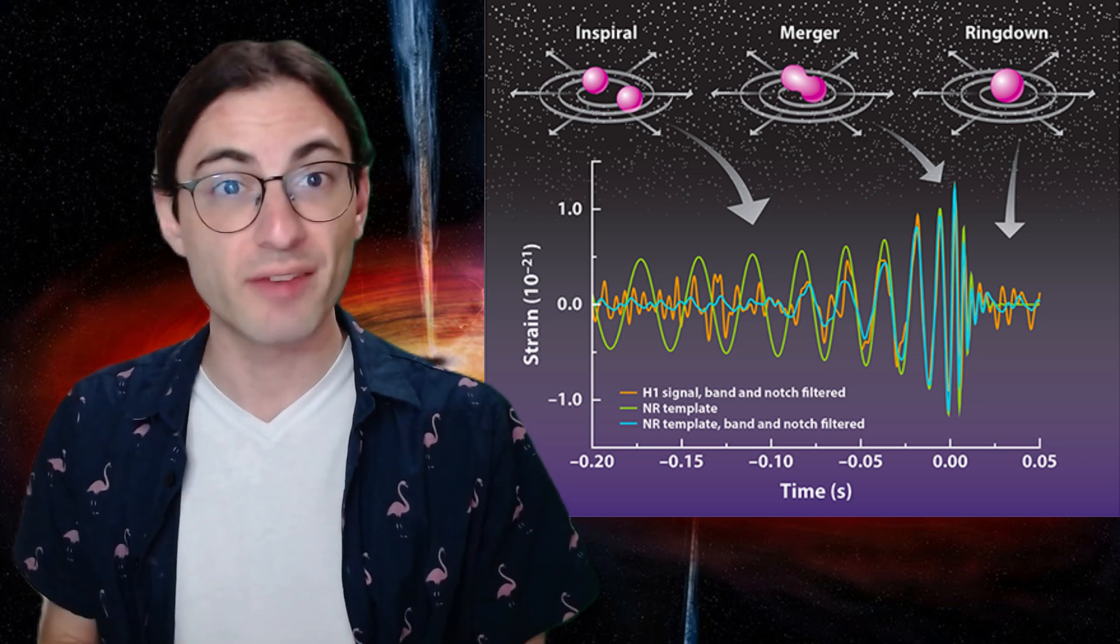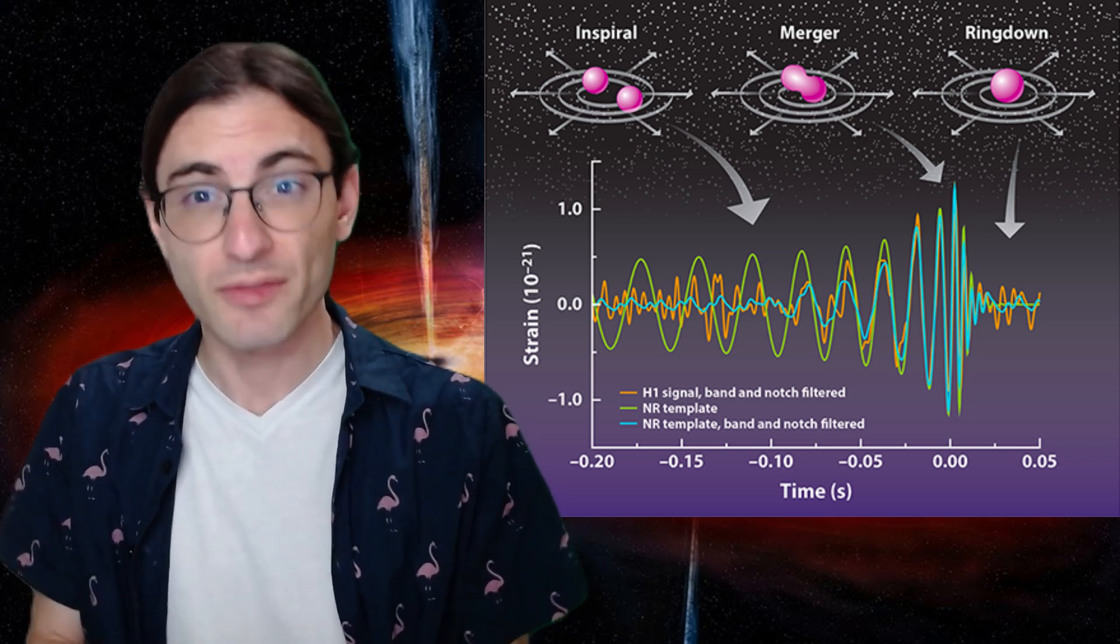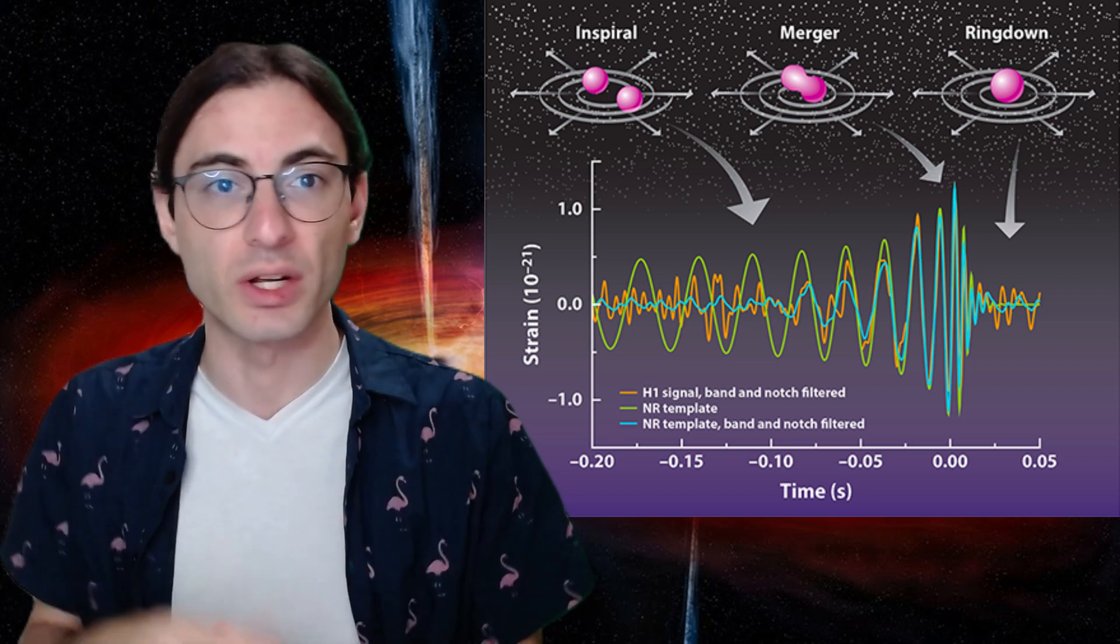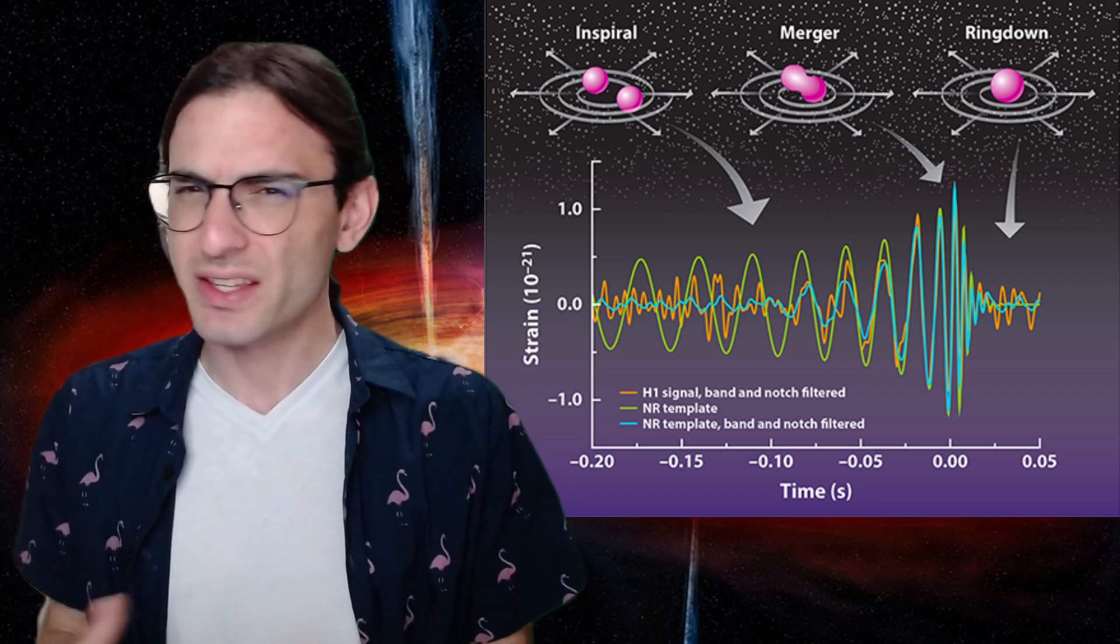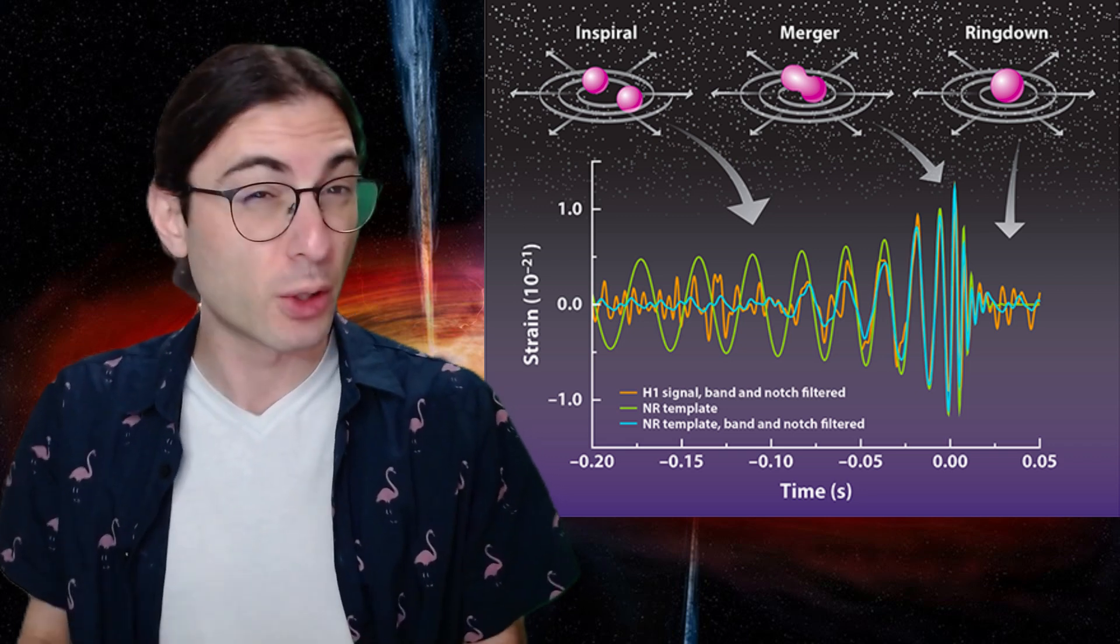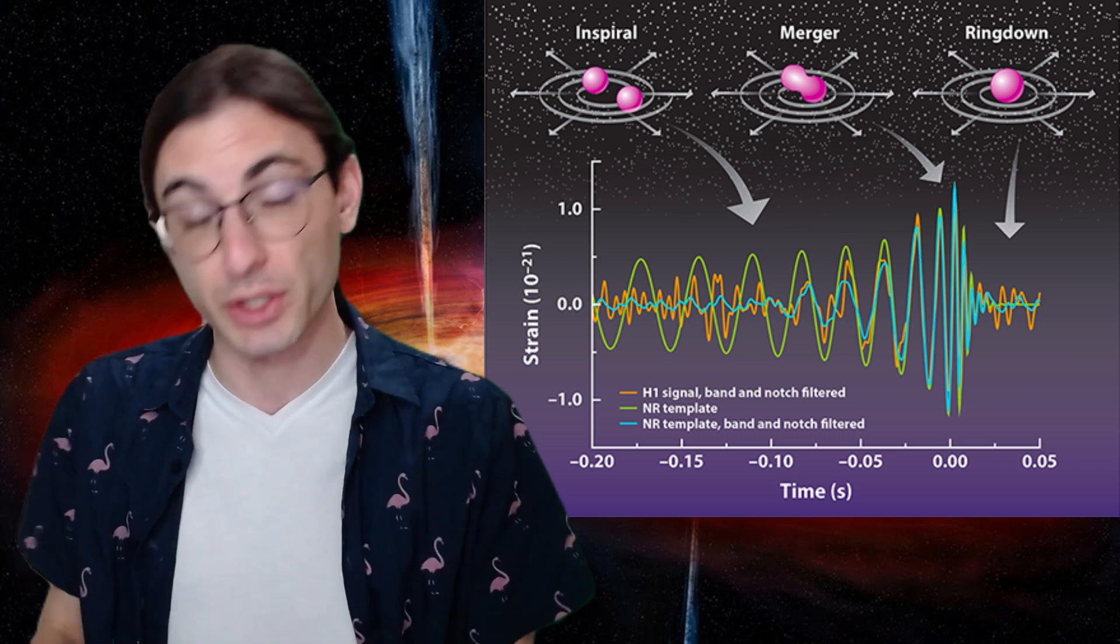And there's some pretty good observational evidence that the conjecture is true. If you look at the data from gravitational wave observations, you'll see a characteristic ring down after the black holes collide. This kind of exponential decay of gravitational wave emission is exactly what you would expect to see if the post-merger black hole settled down to a Kerr black hole.